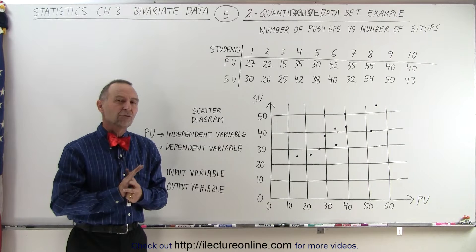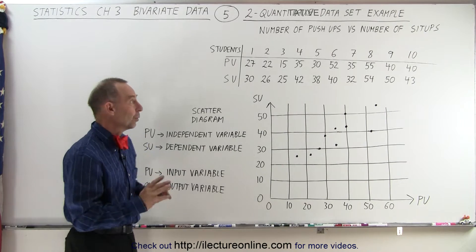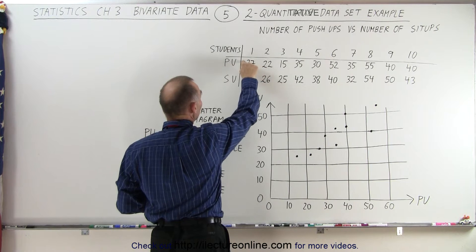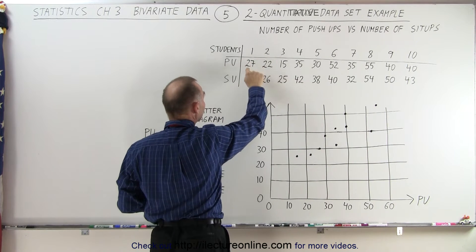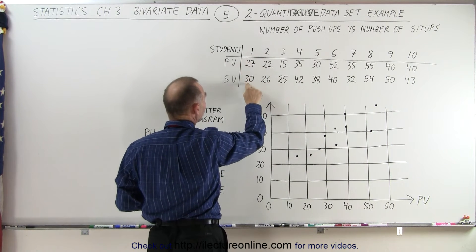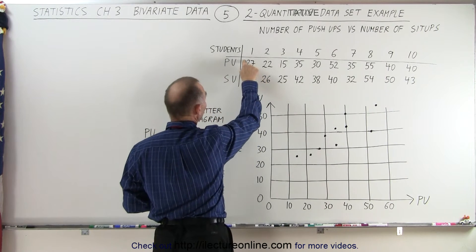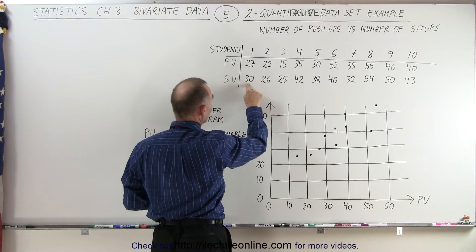But first, what we want to do is draw a scatter diagram. We have 10 data sets where each data set contains a push-up or each set of data contains a push-up and a sit-up number. So when we put those plots on there, for example, 27 push-ups versus 30 sit-ups.